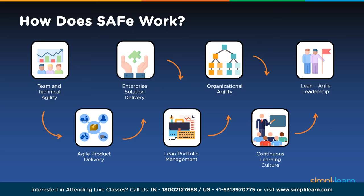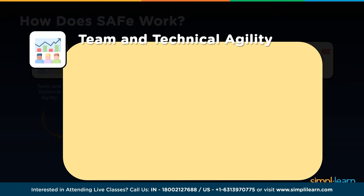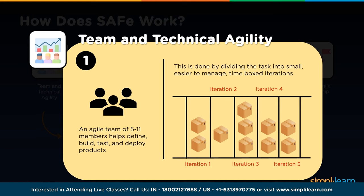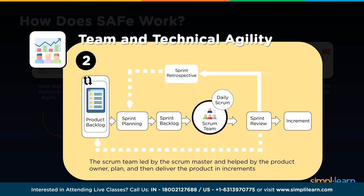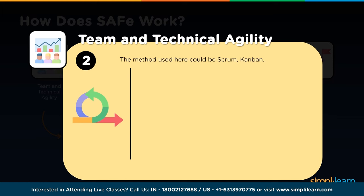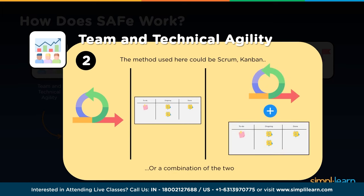How does SAFe work using these competencies? Team and technical agility involves an agile team of 5 to 11 members that helps define, build, test, and deploy products by dividing tasks into small, time-boxed iterations. A scrum team led by the scrum master and supported by the product owner plans and delivers the product in increments. After delivery, they hold a retrospective to determine how iterations went and how to improve, incorporating learnings into the next iteration's planning. The method used can be scrum, kanban, or a combination.